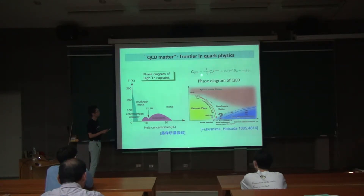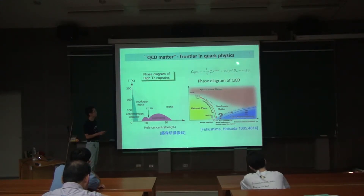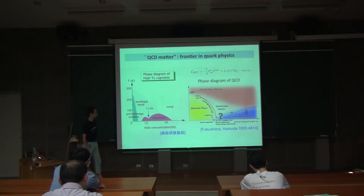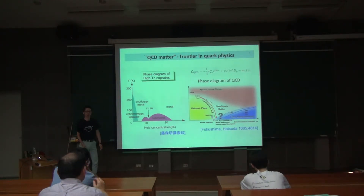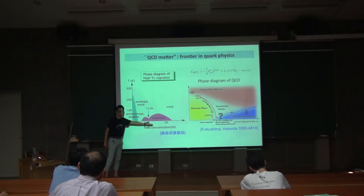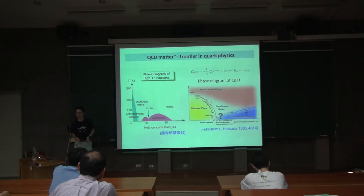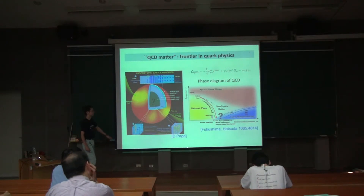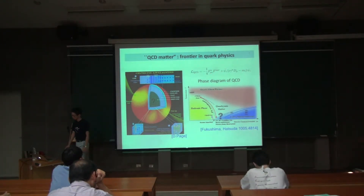Even though you have a Lagrangian, it is very difficult to compute the phase diagram. For high-TC superconductors, it is known that strongly correlated electrons form a pair, and that's how you get superconductivity. But once the theory is strongly coupled, it's very difficult to analyze, even though you have a Lagrangian. From now on, I concentrate on the QCD diagram and its relation to neutron stars — this is called the QCD matter problem.